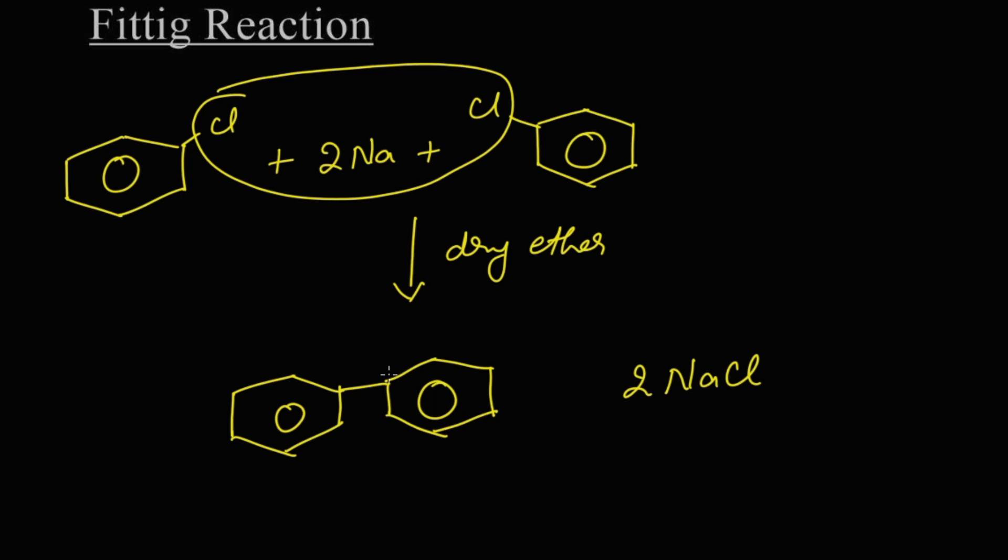Come on, let's write the name for these structures. This is chlorobenzene, reacts with sodium metal in the presence of dry ether. We get a product which is known as diphenyl.